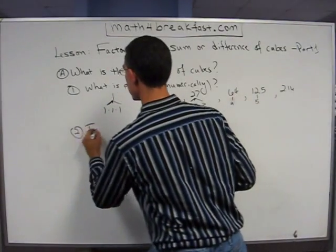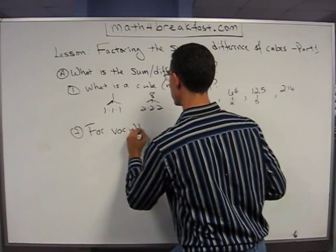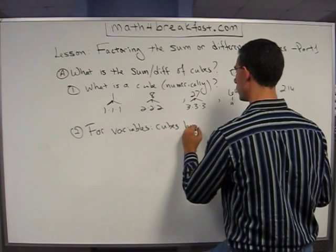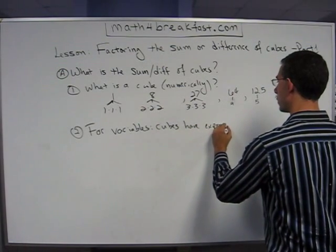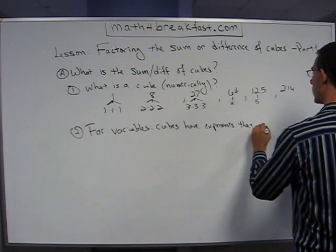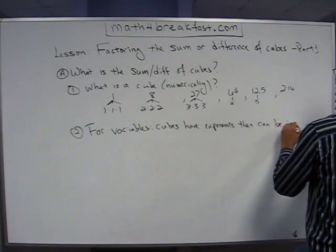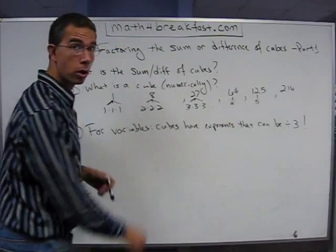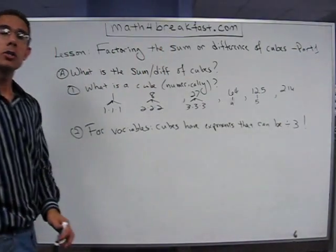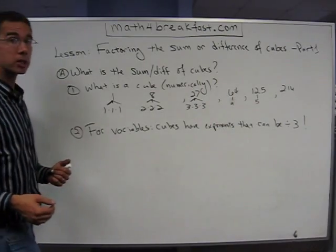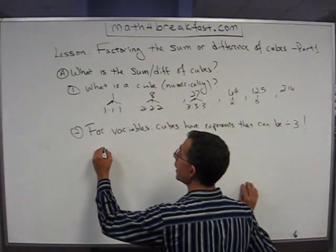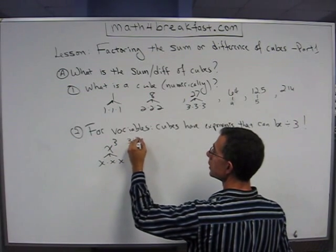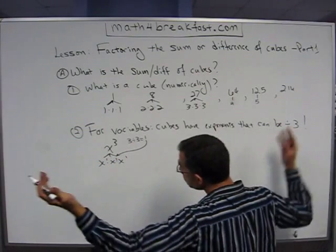So numerically, if you have a number that can be gotten by multiplying the same number with itself 3 times, then that number, the 8 in this case, is a perfect cube. Number 2, for variables, cubes have exponents that can be divided by 3, exclamation point, because I'm excited, they can be divided by 3. Why 3? Well, I have 3 twos all multiplied together here. I have 3 threes or 3 fours or 3 fives, so 3 makes sense. That's probably the number you'd want to be able to divide your exponent by.